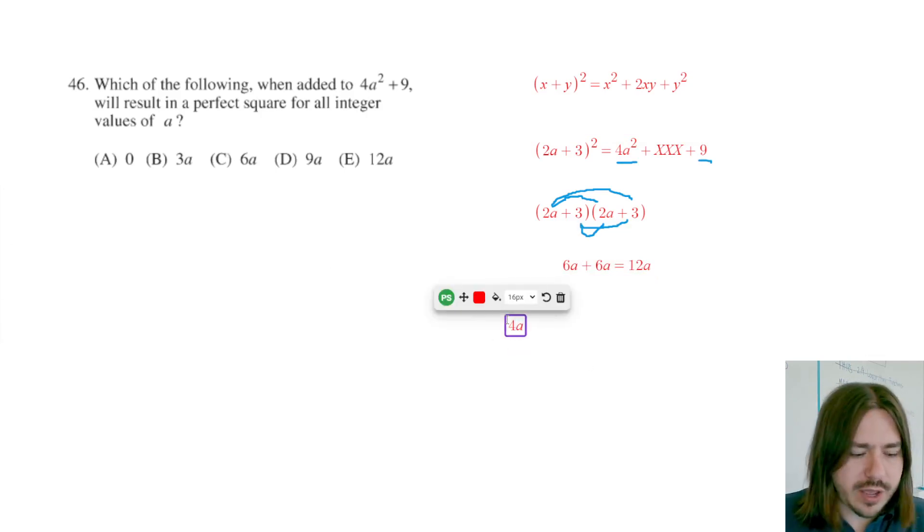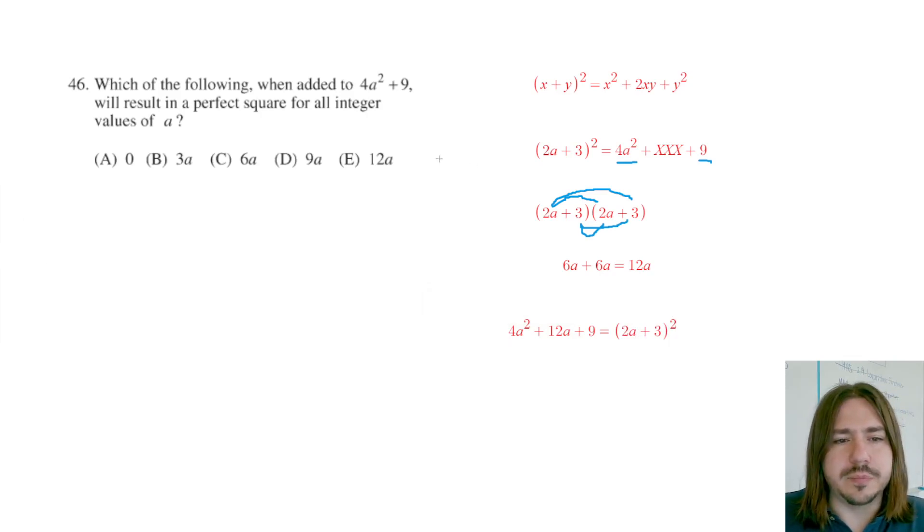So again, 4a squared plus 12a plus 9 is going to be that 2a plus 3 squared. So we've written it as a perfect square trinomial, and so our answer here has got to be E.